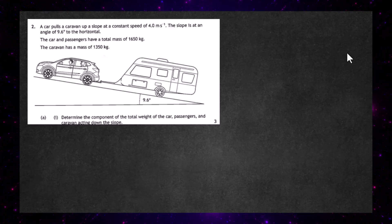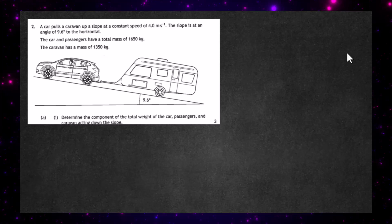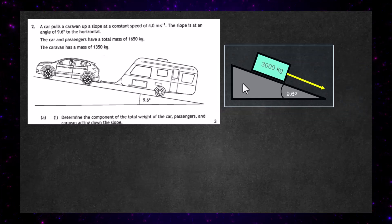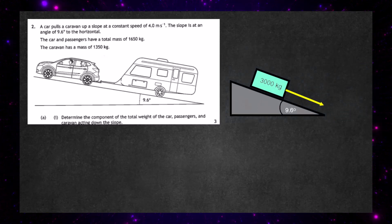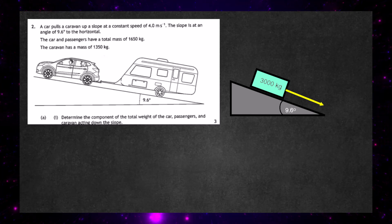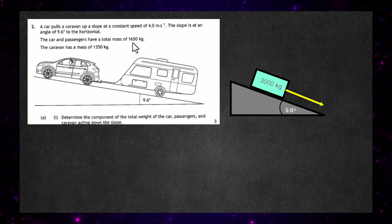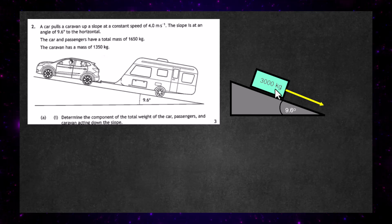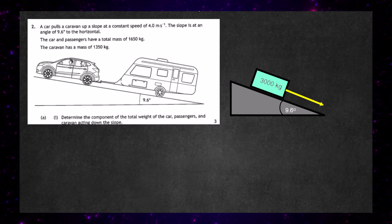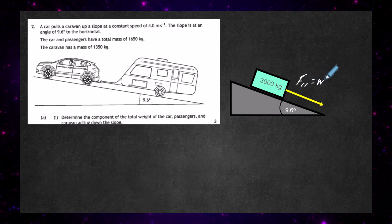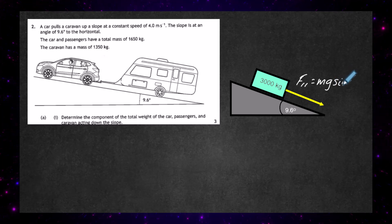For three marks in Part A1, we're asked to determine the component of the total weight of the car, passengers and caravan acting down the slope. The total mass of the car, passengers and caravan amounts to 3,000 kilograms — that's 1,350 plus 1,650 kilograms. It's sitting on a slope at an angle of 9.6 degrees, and the component of weight acting down the slope, F parallel, is always given by the formula mg sine theta.